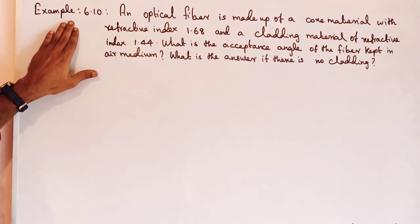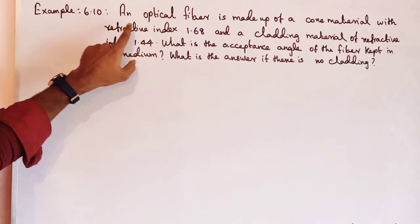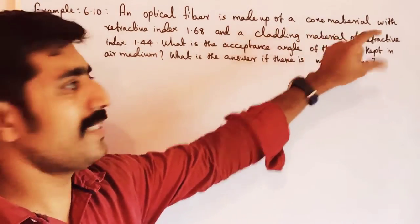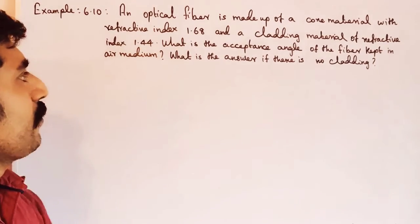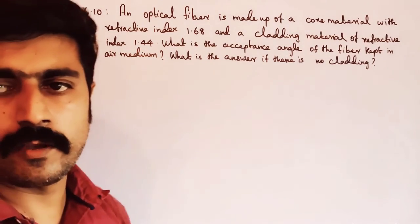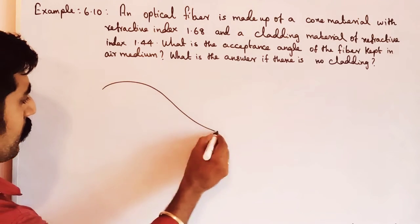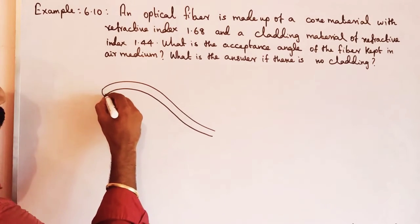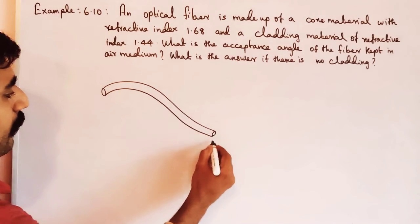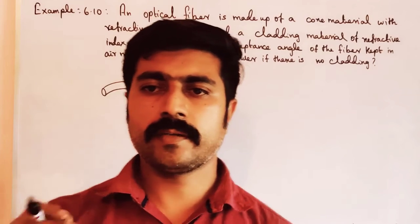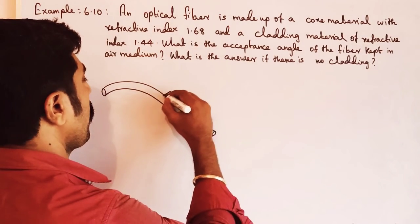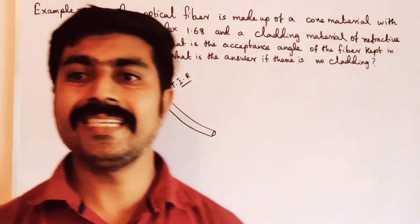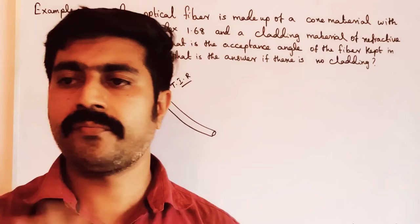See example 6.10. An optical fiber made up of a core material with refractive index 1.68. In the optical fiber, total internal reflection takes place — the entire light ray is reflected.